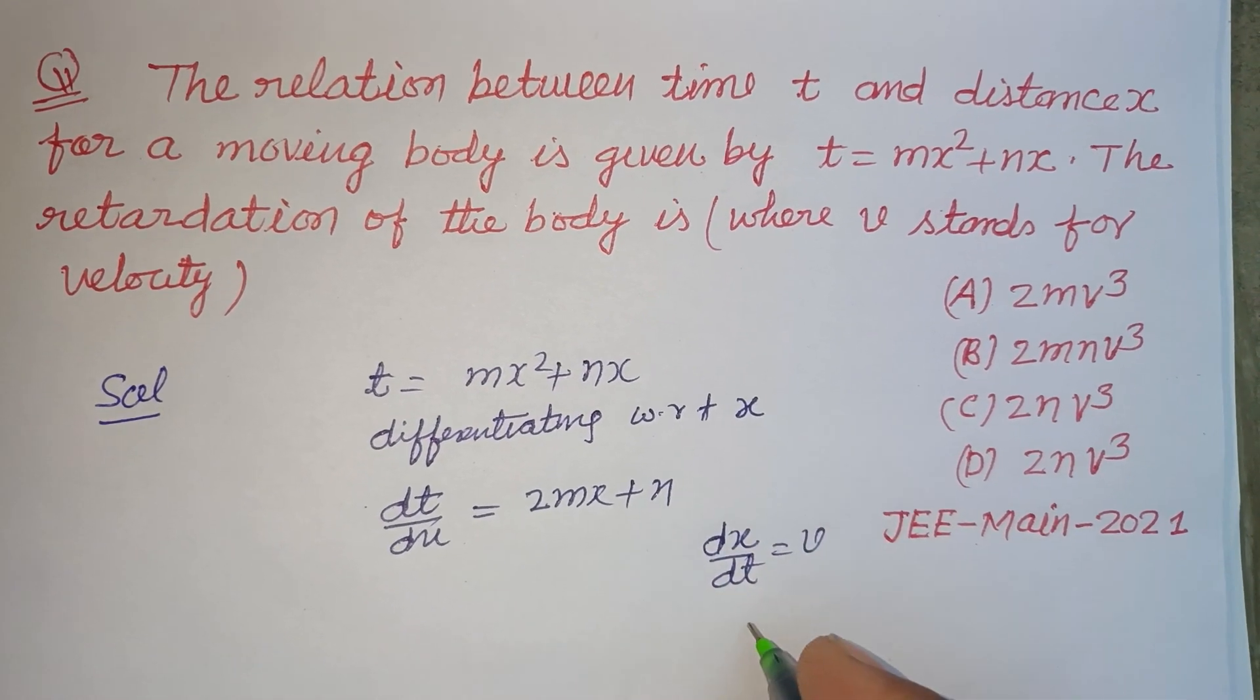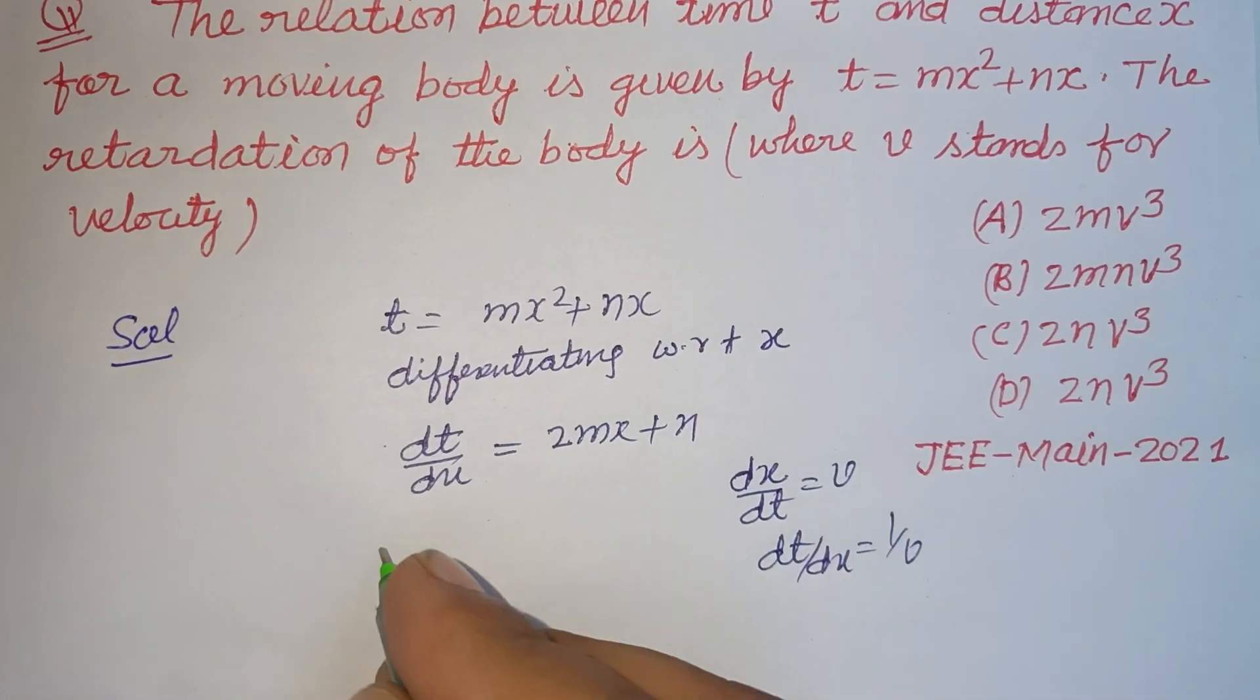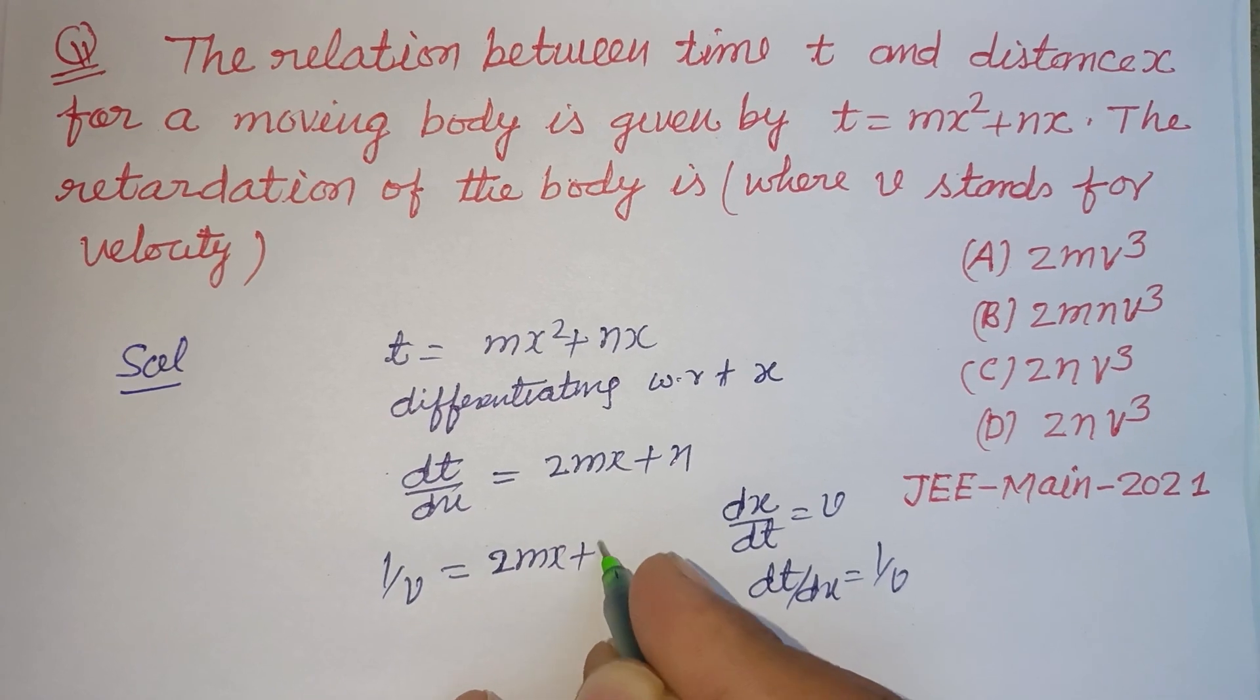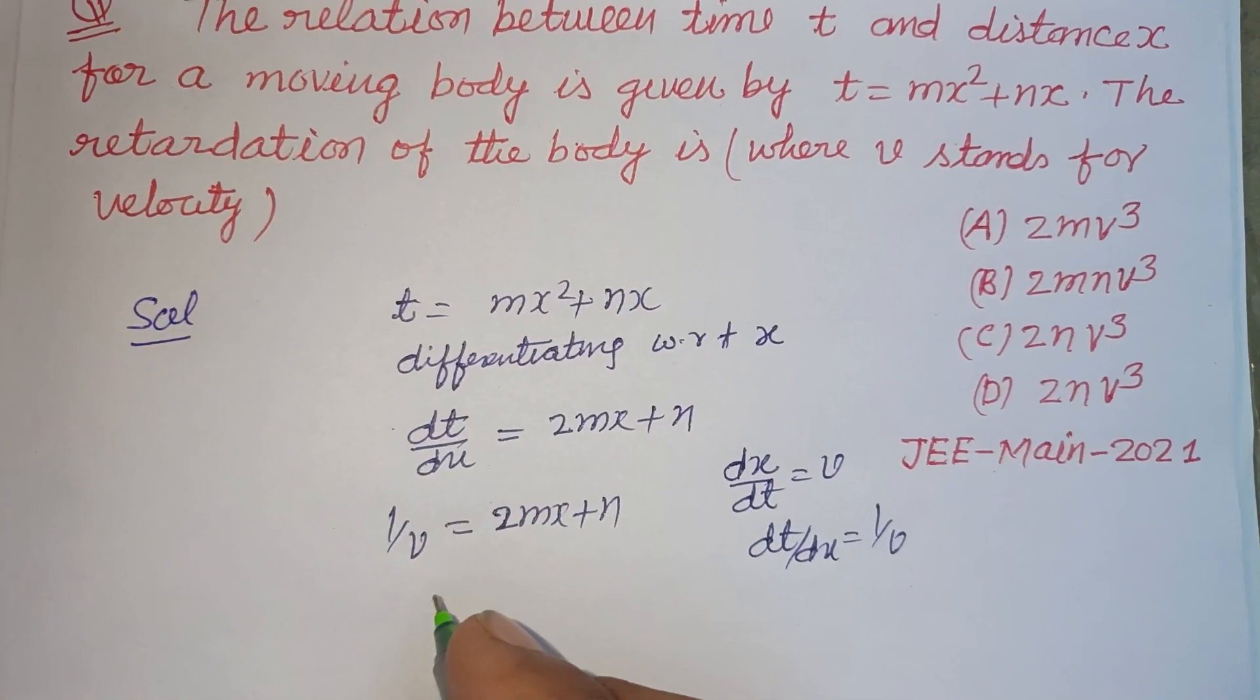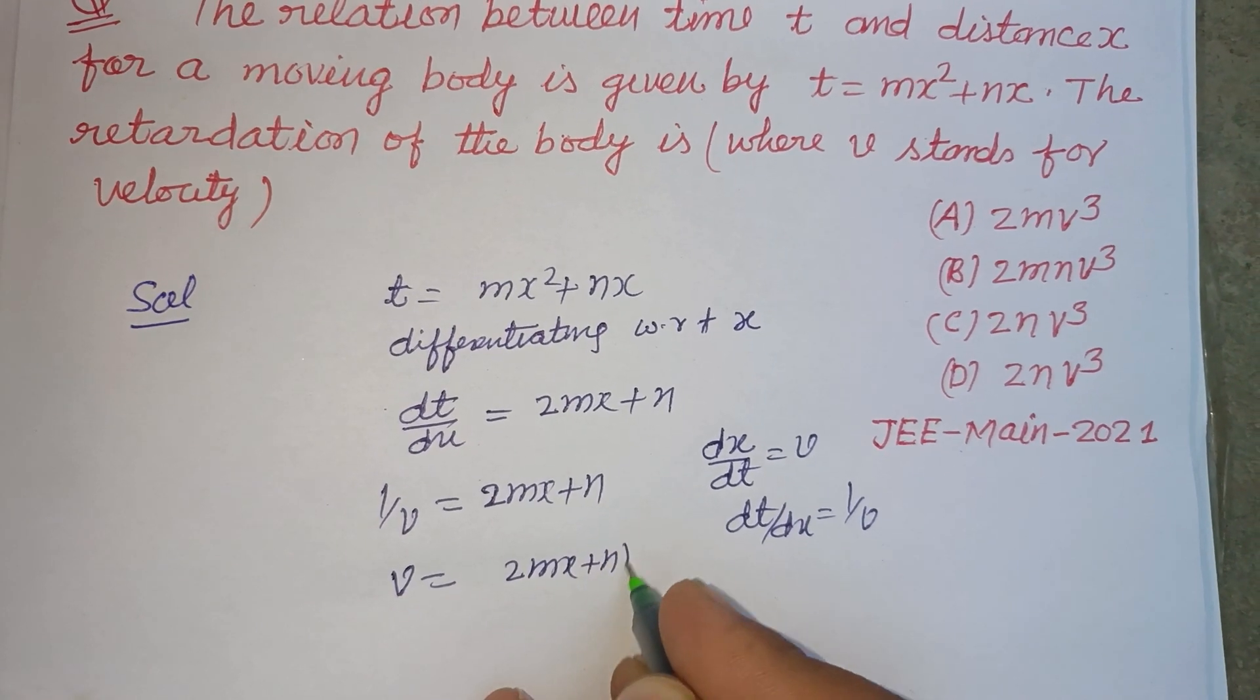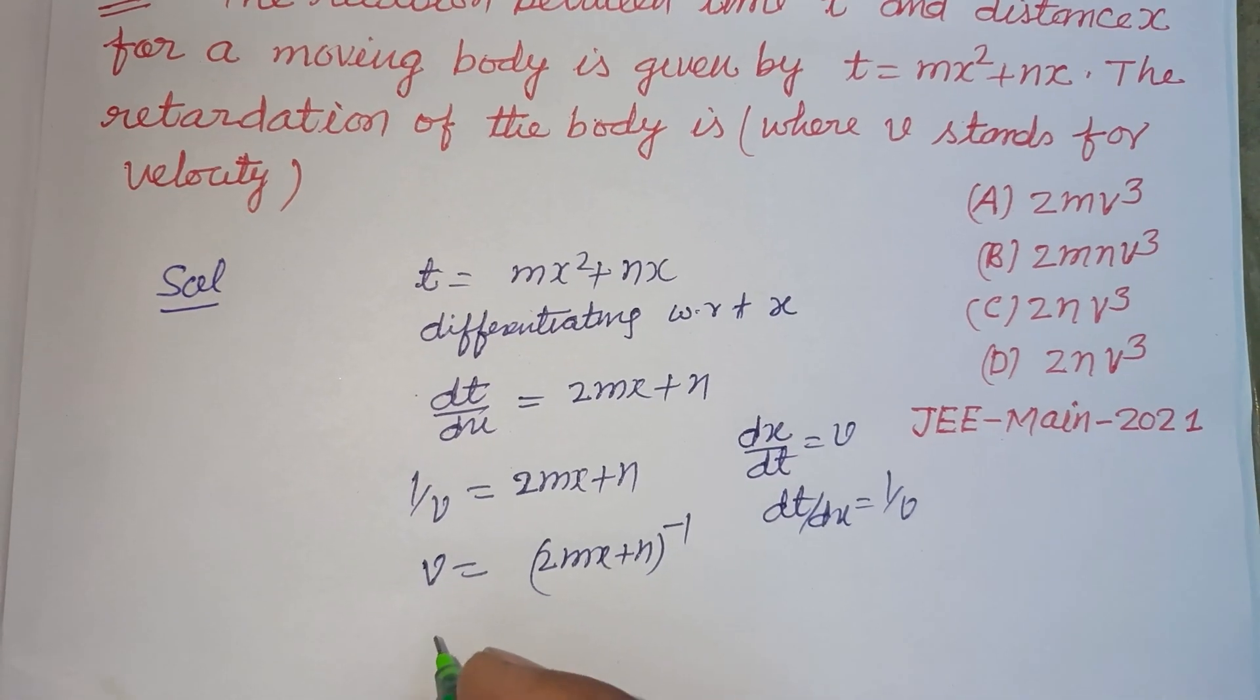Therefore, dt over dx is 1 upon v. So this is 1 upon v equals 2mx plus n. Now reversing this, v equals 2mx plus n to the power minus 1. Now again differentiating with respect to x.